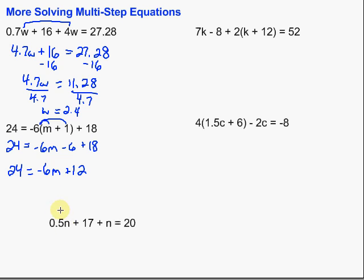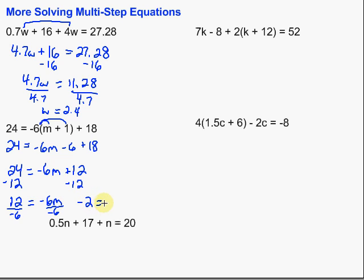We want to get that m by itself, so we get rid of the other stuff. We have plus 12, so we subtract 12 from both sides. 24 minus 12 is 12, equals negative 6m. Then finally, we divide by negative 6 on both sides — doing the opposite of multiplication. 12 divided by negative 6 is negative 2, so we're left with m equals negative 2.